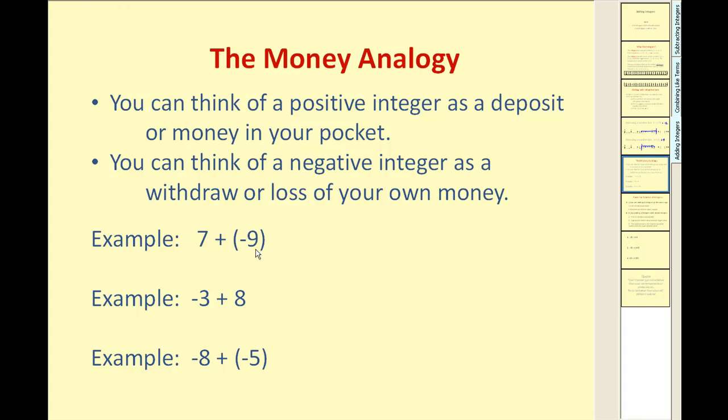Seven plus negative nine. You have seven dollars because it's positive. And then you lose nine dollars. Well, if you have seven dollars and you lose nine dollars, you're going to have a loss. And your loss will be a total of two dollars. Seven plus negative nine is equal to negative two.